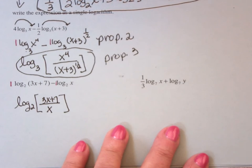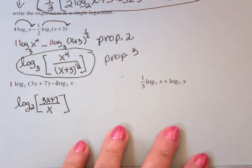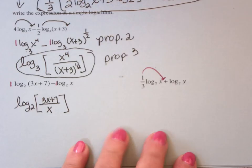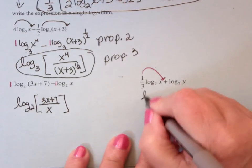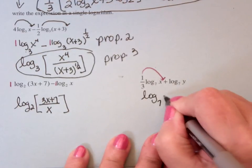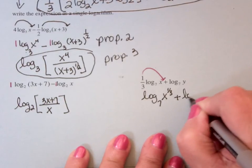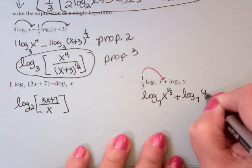Now, here I notice that I've got 1/3 times log, which means the first thing I'm going to have to do is bring that exponent up. So this becomes log base 7 of x to the 1/3 power plus log base 7 of y.